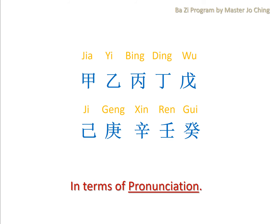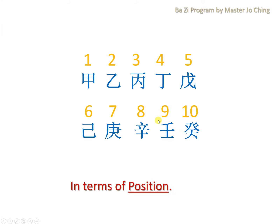First of all, allow me to introduce to you the Ten Heavenly Stems. In terms of pronunciation, this is JIA, YI, BING, TING, WU, JI, GENG, XIN, REN, GUI. And in terms of position, JIA is number one, followed by YI and so on and so forth, with GUI being last in position.